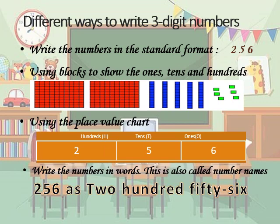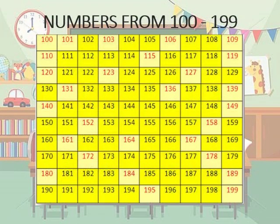We can write it in words, also known as number names, as 256. Let us look at all the three digit numbers starting from 100, then comes 101, 102, 103, and so on.